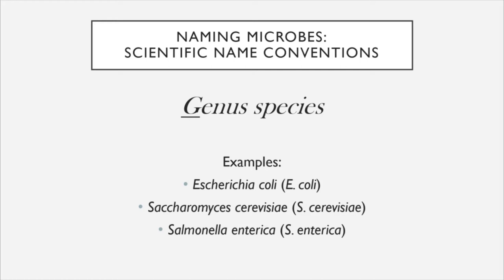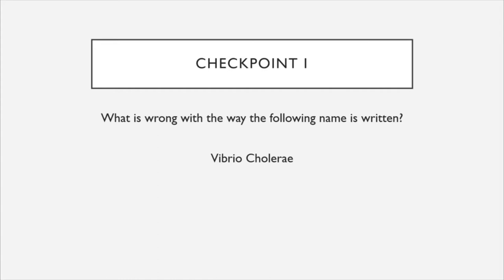Salmonella enterica is named for Daniel Salmon, who discovered it, and enterica is a play on the word entero, which describes bacteria found in the intestines. These are just a few examples, and our very first checkpoint of this lecture asks you to tell me what is wrong with the way the name of this microscopic organism is written — Vibrio cholerae, the bacterium that causes the digestive disease cholera. Tell me everything that's wrong with the way it's written.